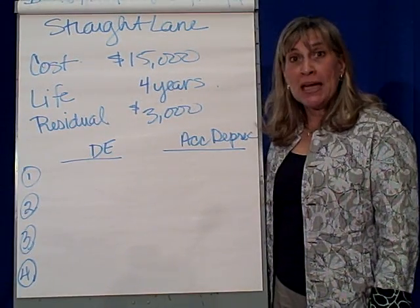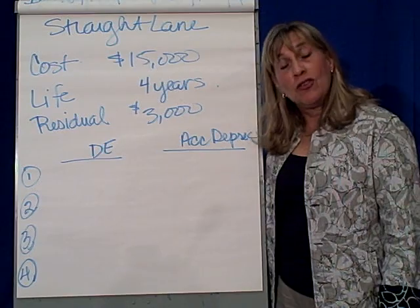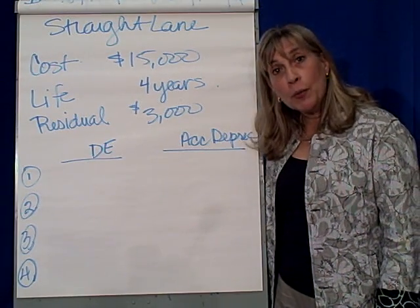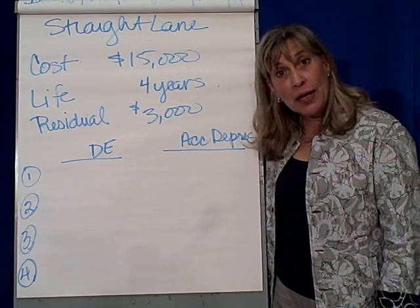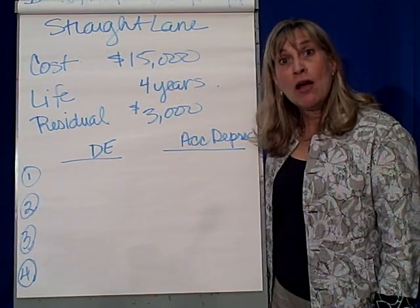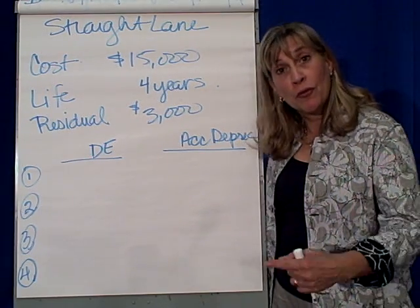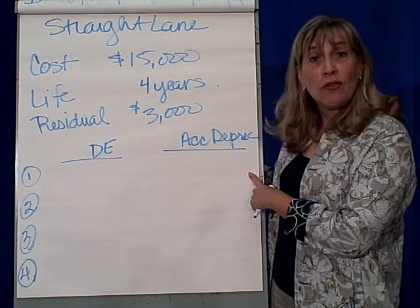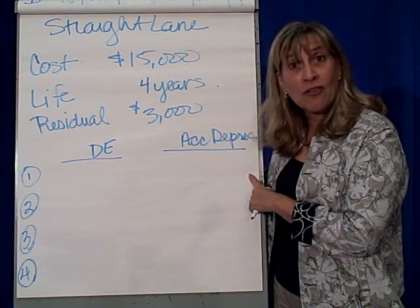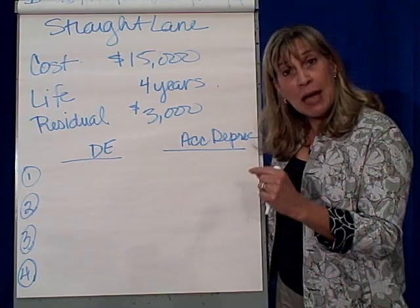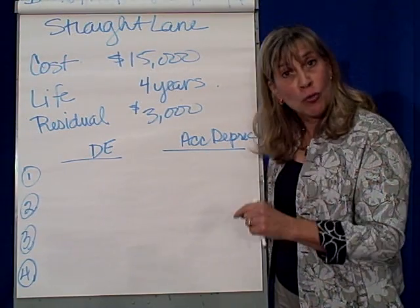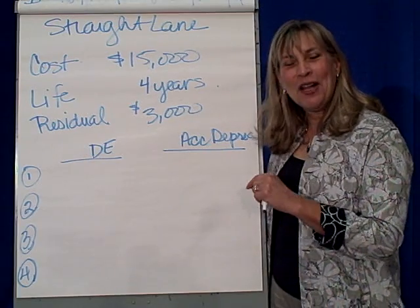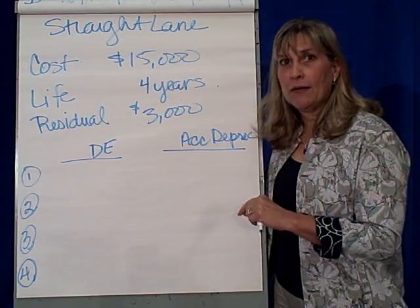Depreciation. There are many methods to use in depreciating assets. Generally, corporations use the straight-line method for book purposes or for financial statement purposes. We're going to demonstrate how to do straight-line depreciation, then units of production, and we'll end up doing double declining balance.